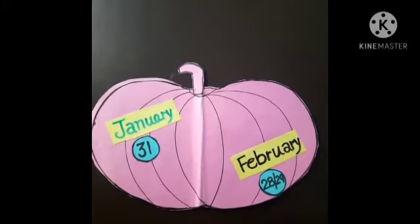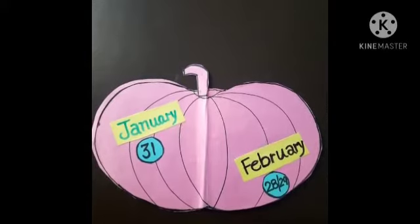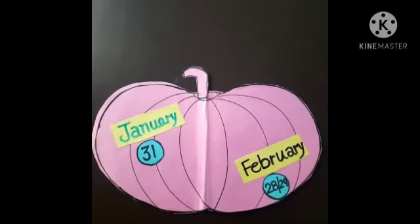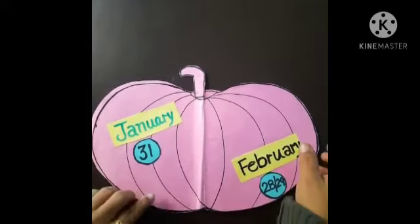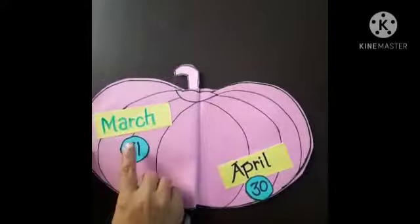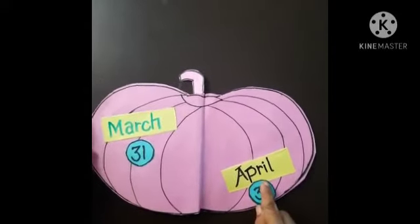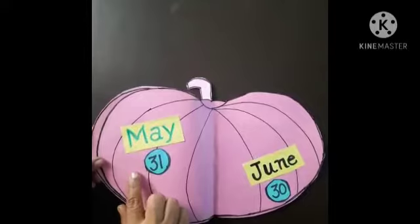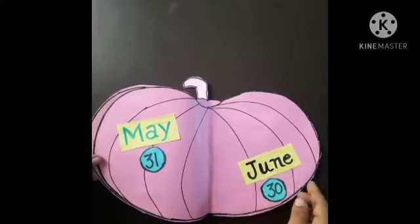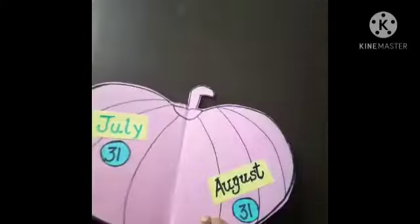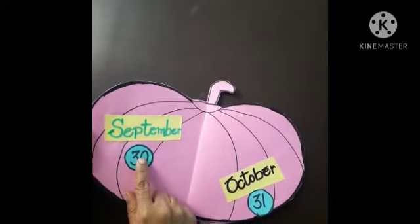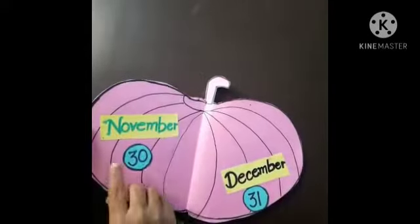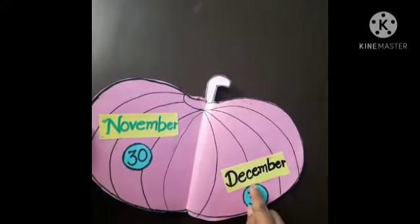Do you know kids how many months are there in a year? Yes, there are 12 months in a year, and they are: January, February, March, April, May, June, July, August, September, October, November, and December.